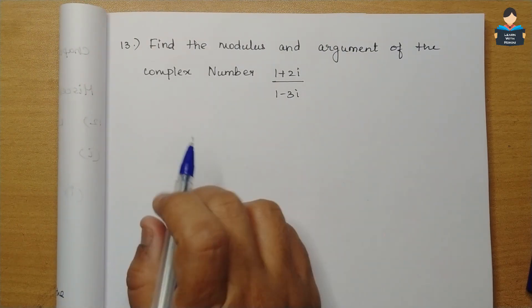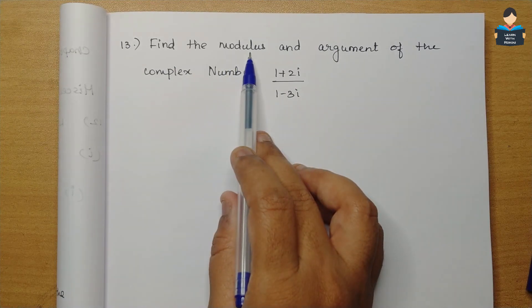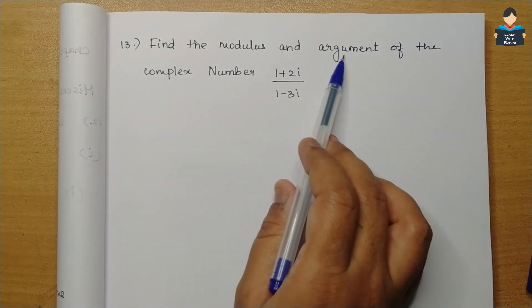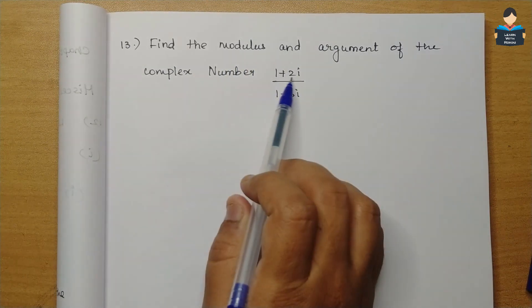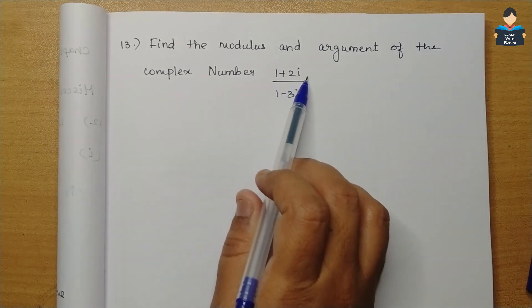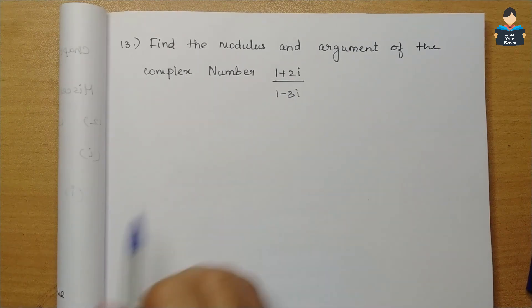Next is the 13th sum: Find the modulus and argument of the complex number 1 plus 2i divided by 1 minus 3i.